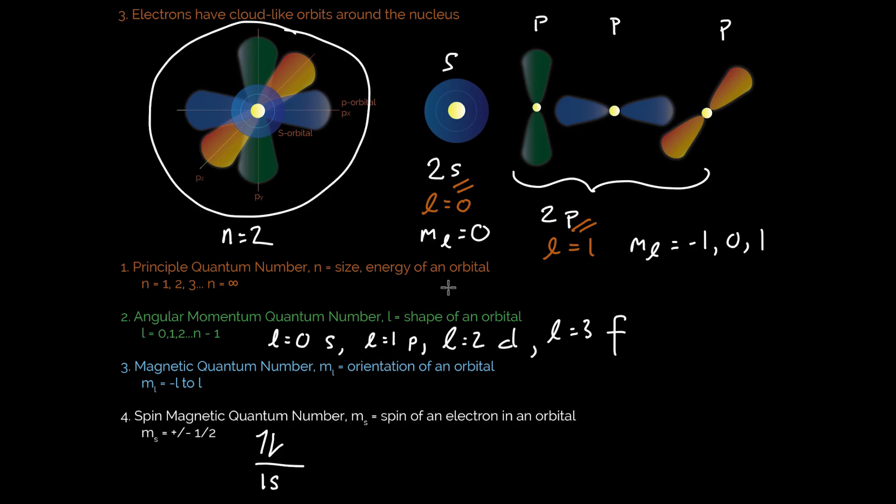And lastly, my spin magnetic quantum number is basically saying that any electrons in any of these orientations, orbitals, or levels can have a plus or minus spin. And for now, we're not going to go past that.